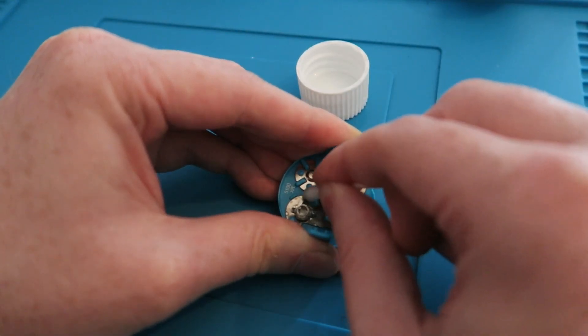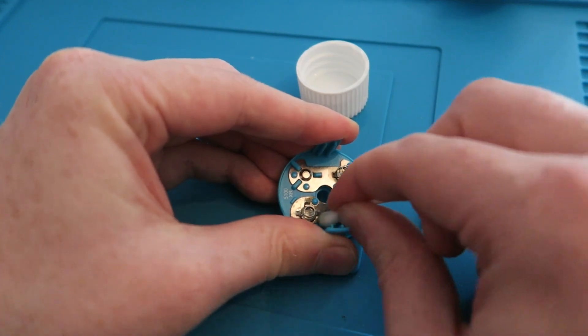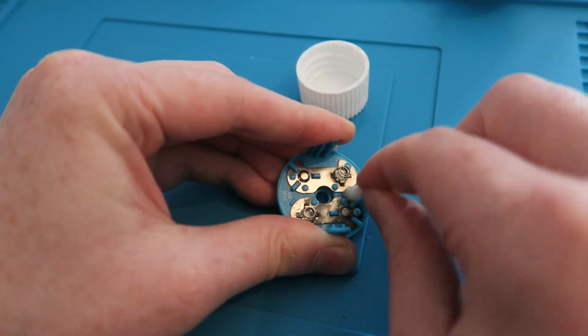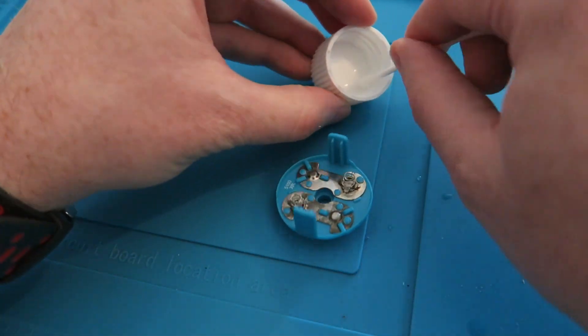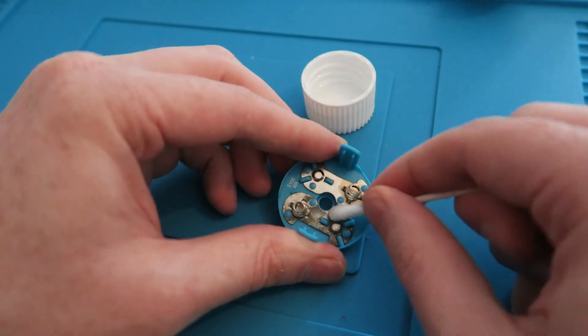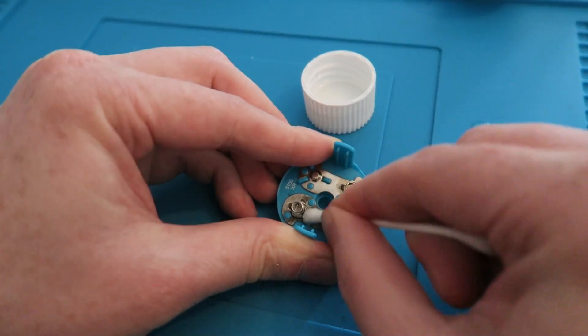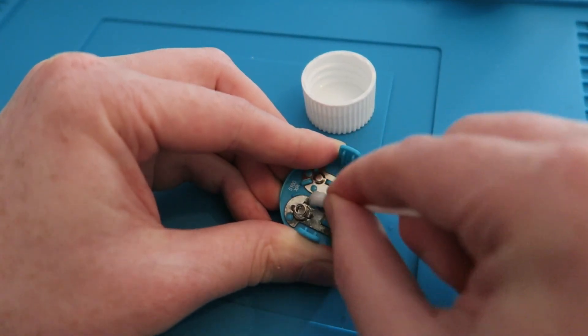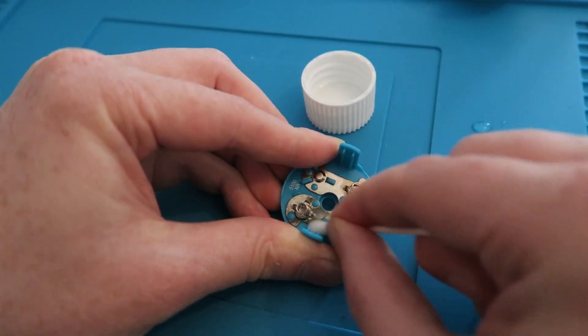And the good thing about this isopropyl alcohol is it evaporates really quickly, so we shouldn't have to wait long for it to evaporate. Use the fresh side of the swab and keep going. Really what we want to see is no more coming off on the bud, and it looks like it's getting there now.